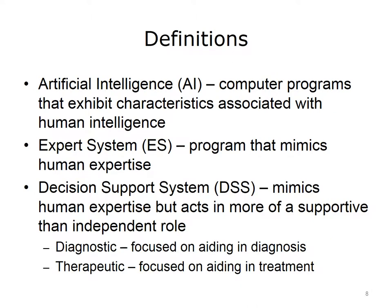Artificial intelligence, or AI, is the area of computer science concerned with building programs that exhibit characteristics associated with human intelligence. Expert systems were a type of computer program developed using AI techniques that attempted to mimic human expertise. Decision support systems backed off from being the complete expert and attempted to play more of a supportive than independent role. Decision support is sometimes broken down into diagnostic decision support, focused on aiding diagnosis, and therapeutic decision support, focused on aiding in treatment.